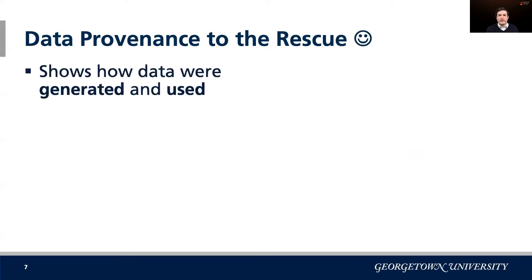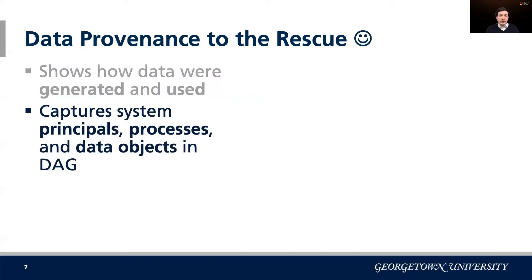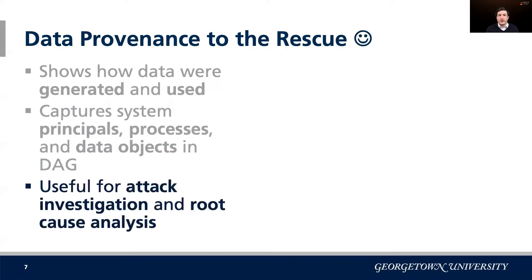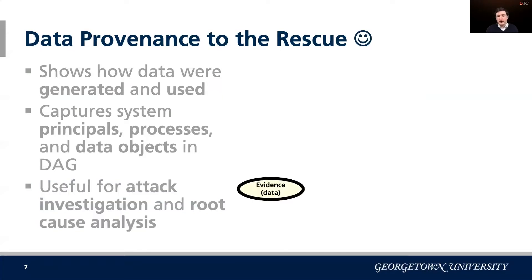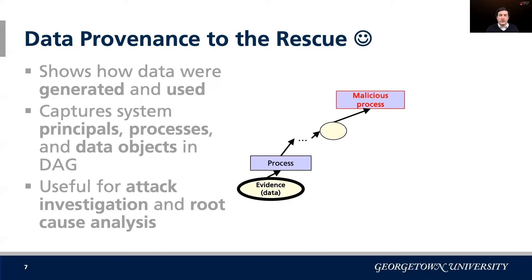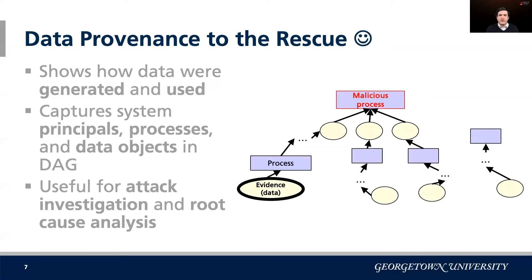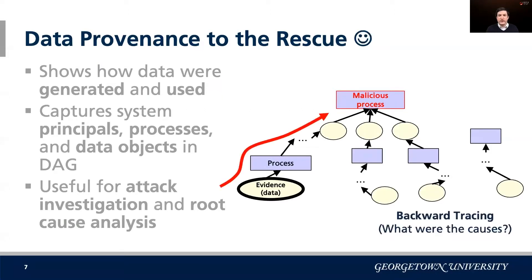Data provenance is basically all of the metadata that shows how data we care about were generated and used — in other words, the history of it. That includes the system's principals or agents (who or what was responsible), processes or activities, and the data objects. We can model the relations among all of these with a directed acyclic graph that shows that history. We can search past history quite efficiently — for instance, if we have some piece of evidence that an attack occurred, that evidence was generated by a process, and back in its history there was a root cause of a malicious process.